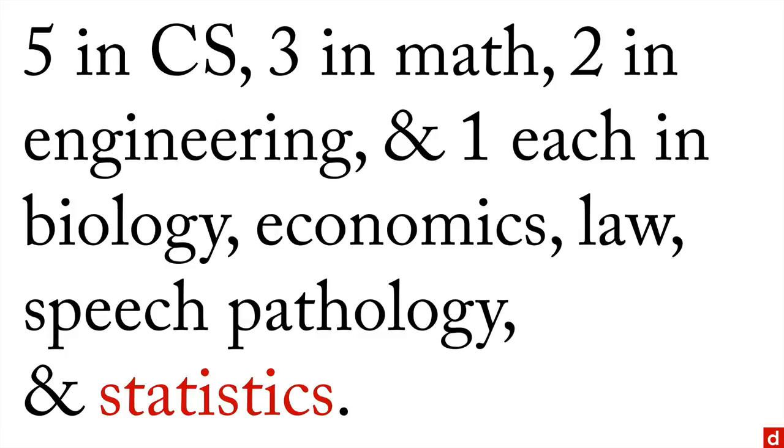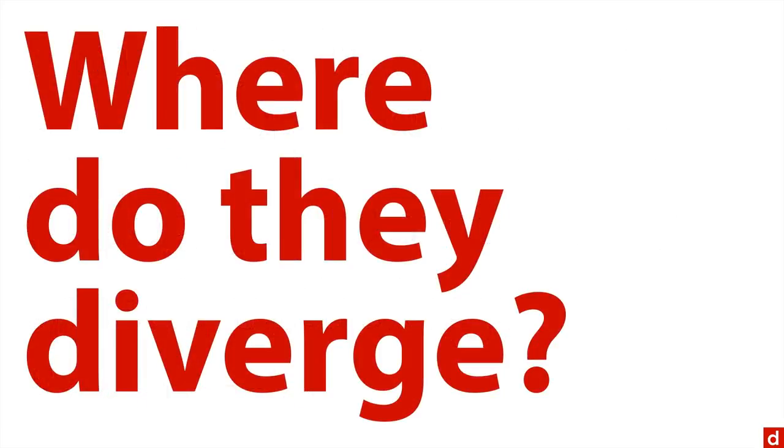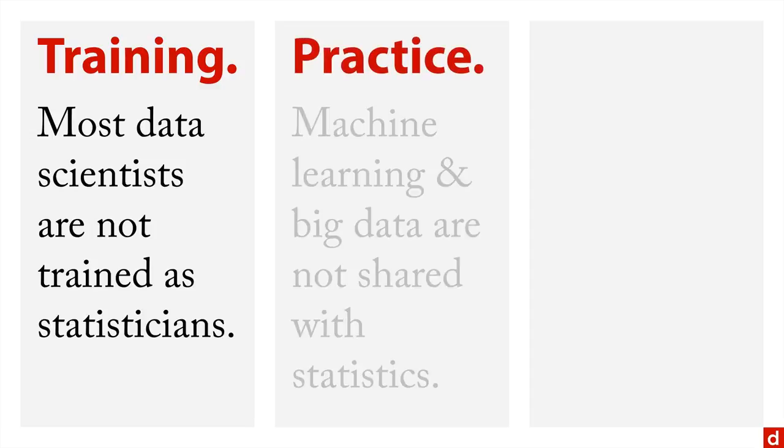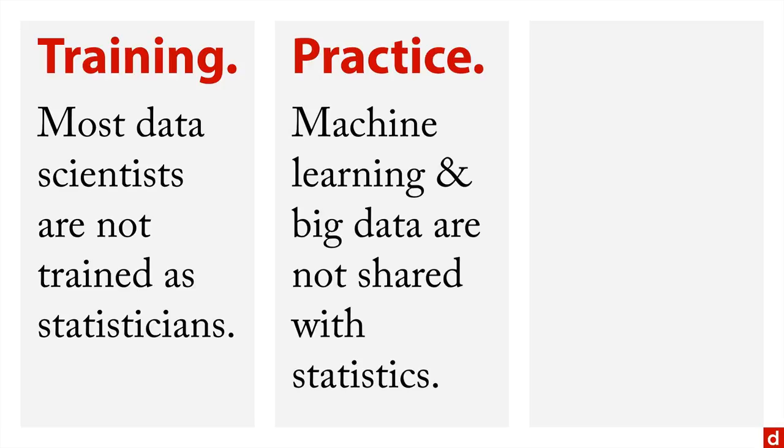So that gets us to the next question, where do these two fields, statistics and data science, diverge? Because they seem like they should have a lot in common, but they don't have a lot in training. And specifically, we can look at the training. Most data scientists are not trained formally as statisticians. Also in practice, things like machine learning and big data, which are central to data science, are not shared generally with most of statistics.